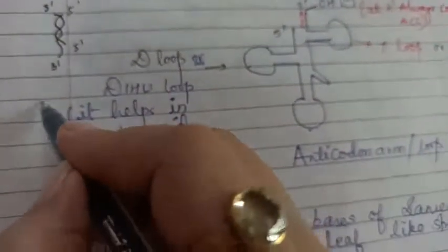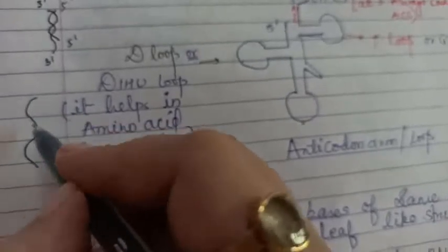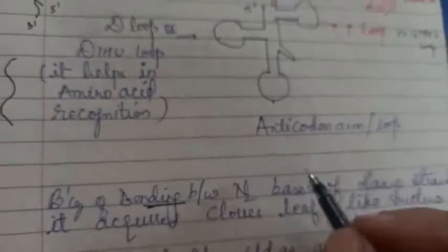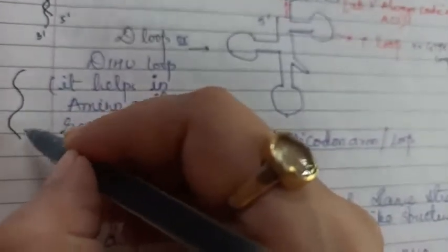If you look at it clearly, it has three loops. At the three dash end it is written ACC. Why is it written ACC here? Because the three dash end always codes for ACC. Now, because of bonding between nitrogenous bases of same strands, it acquires clover leaf like structure. Usually we say RNA is single stranded, meaning it should have one helix like DNA has two. But it coiled like this, became folded, because there is bonding taking place between nitrogenous bases. Due to bonding, the structure is like clover leaf structure.